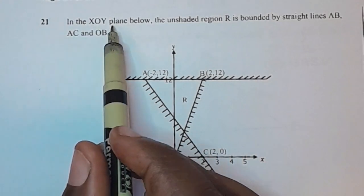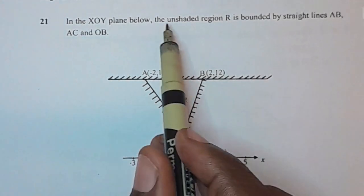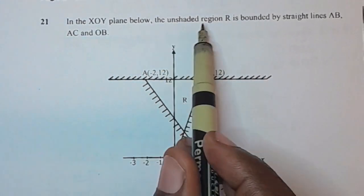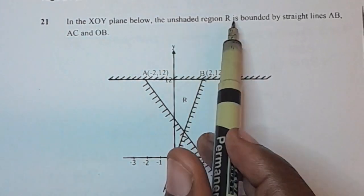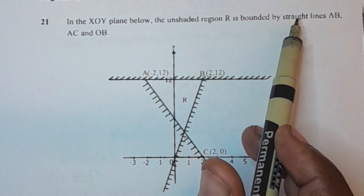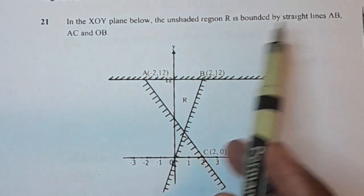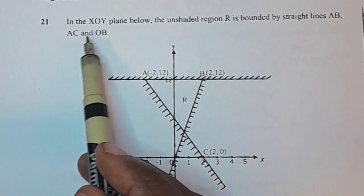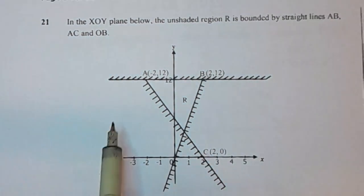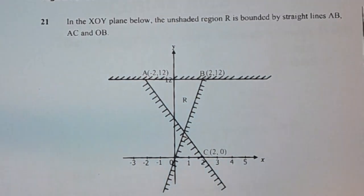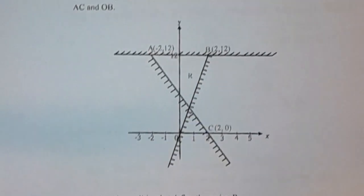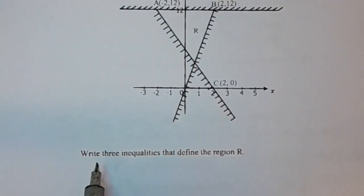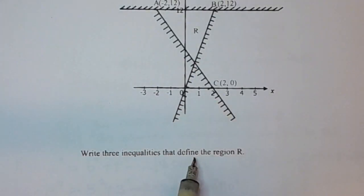In the X-Y plane, the unshaded region R is bounded by straight lines A, B, C, and OB. The question says: write three inequalities that define the region R.